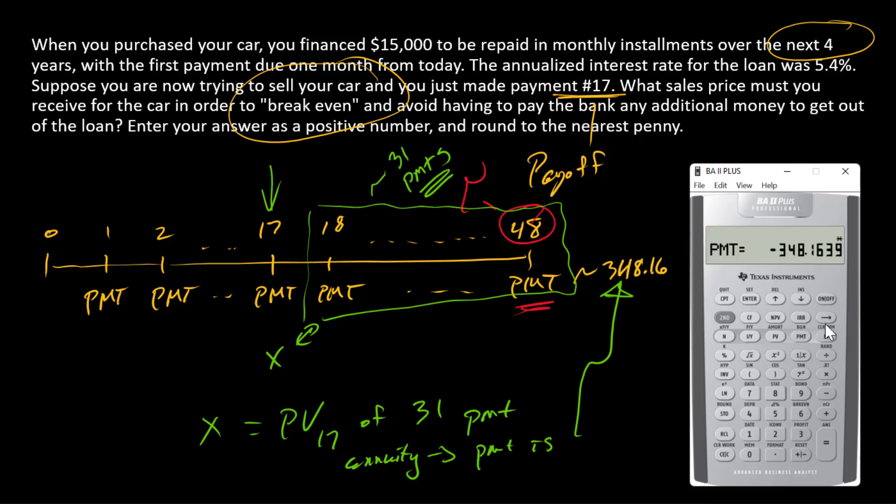So all we need to do is change the number of payments. So change N to 31. So I'm going to say 31 goes into N, and then I'm going to recompute PV. And so the answer is $10,053.02. And so as long as you sell the car for more than that amount, you will not owe the bank any money to get out of the deal. That's your breakeven.